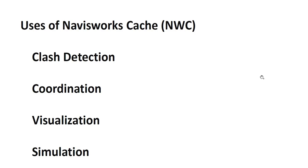Clash detection is one of the primary uses of NWC files. Navisworks can detect clashes between different building elements, such as structural beams conflicting with ductwork, or piping systems intersecting with walls. Clash detection helps identify potential conflicts early in the design or construction process, allowing teams to resolve issues before they become costly problems on site.